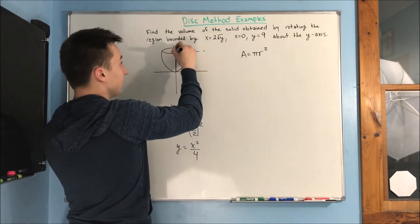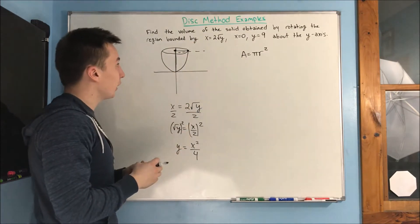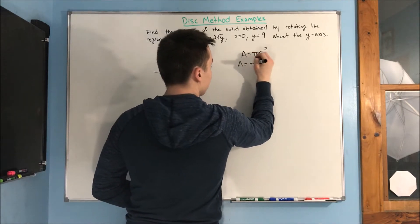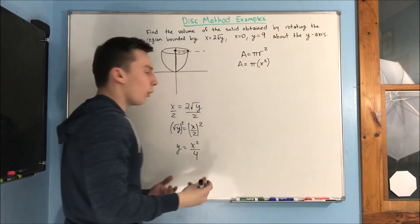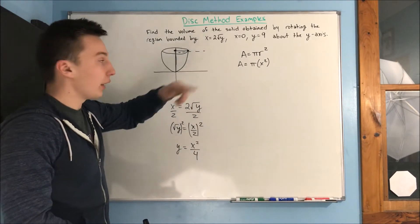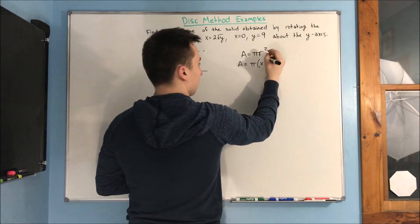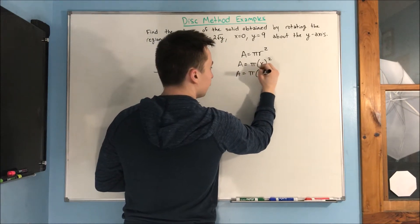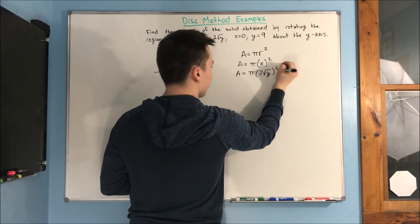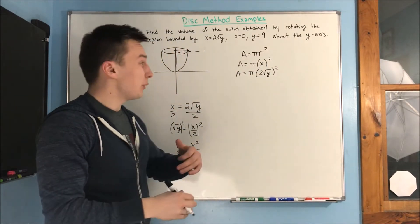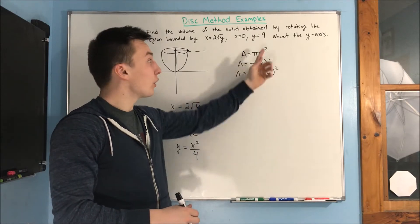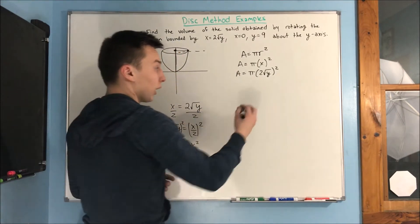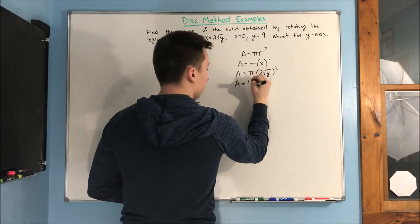All we need to do now is find our radius — the distance from the center to the edge, which is x. So area equals pi x squared. But what is x? Well, x is 2 rad y. We are going to be integrating with respect to y, so we need everything in terms of y. Substituting and squaring, we get area equals 4 pi y.